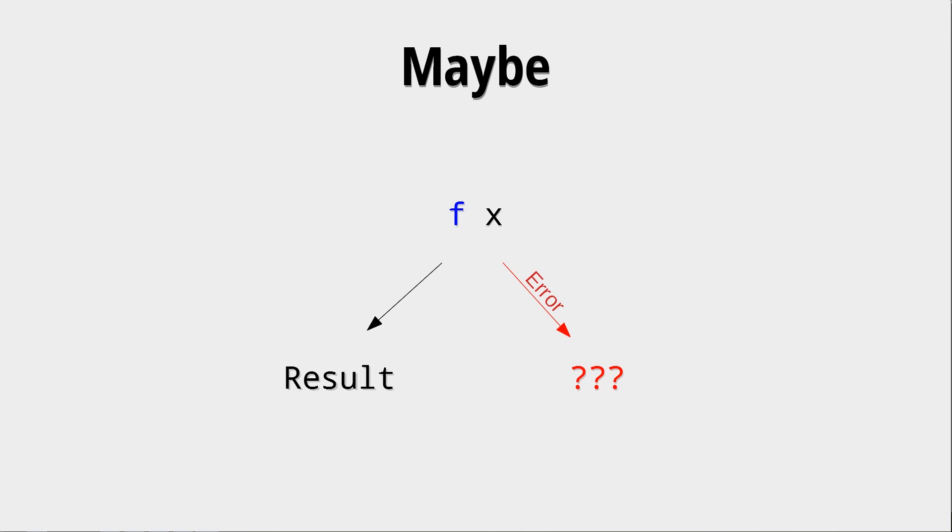In Haskell, functions are pure, meaning that they have some input, the argument x in this case, and they produce some output, the result in this case. The question is, if there is some error or exception happening in the function, what should it return?